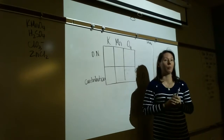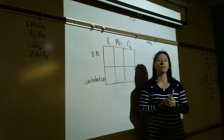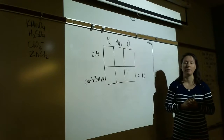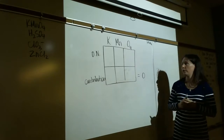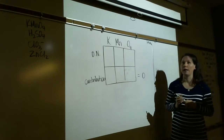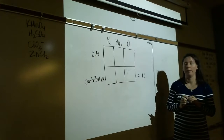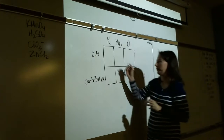Notice the oxidation numbers themselves do not add up to zero — it's the contributions that add up to zero. One plus seven minus two is not zero. The contributions are what add up to zero. The bottom row is just to help you stay organized and solve for unknowns.